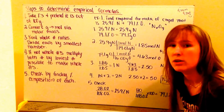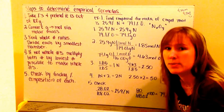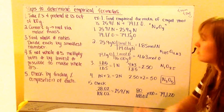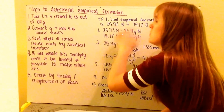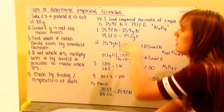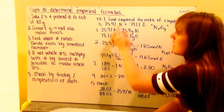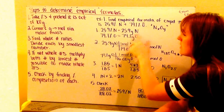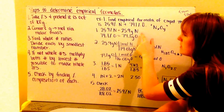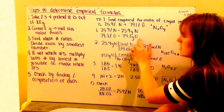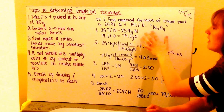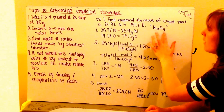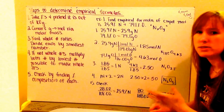This is like the information you'd calculate in percent composition problems. Now it's given to you. Step one: take your percents and pretend it's out of 100. So 25.9% of 100 grams is 25.9 grams of nitrogen, and 74.1 grams of oxygen. We're looking to figure out our formula, so I have NxOy, where X and Y are the subscripts I'm trying to find.